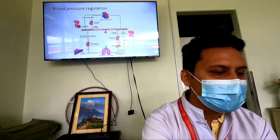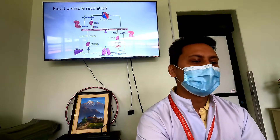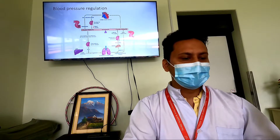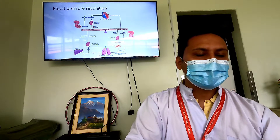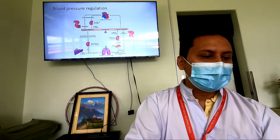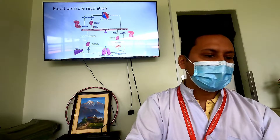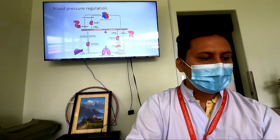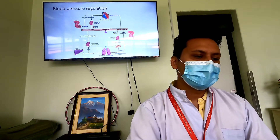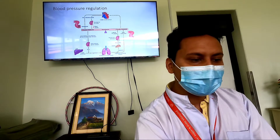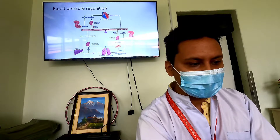Angiotensin 2 acts by two ways: it directly causes vasoconstriction, which increases peripheral vascular resistance and blood pressure. It also acts upon the adrenal gland, stimulating it to secrete aldosterone. Aldosterone's main action is reabsorption of sodium and water, which increases blood volume, increases cardiac output, and ultimately raises blood pressure.